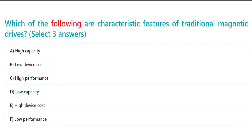Which of the following are characteristic features of traditional magnetic drives? Select three answers. A. High capacity. B. Low device cost. C. High performance. D. Low capacity. E. High device cost. F. Low performance.